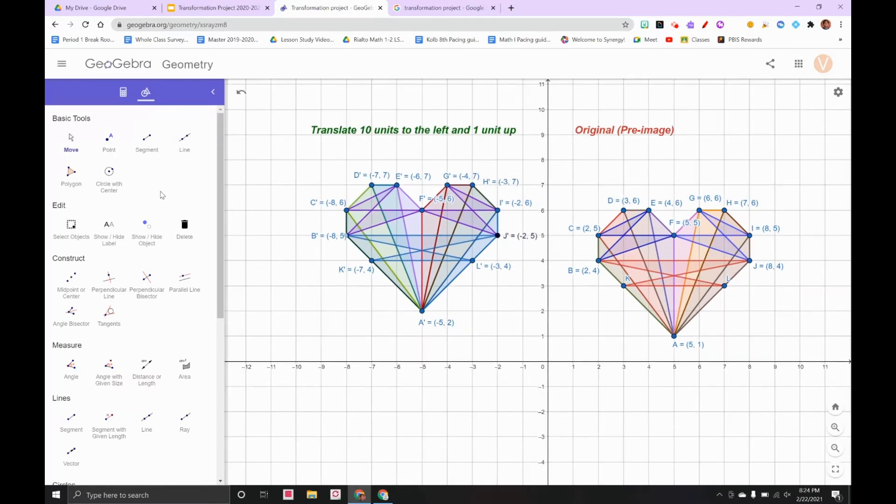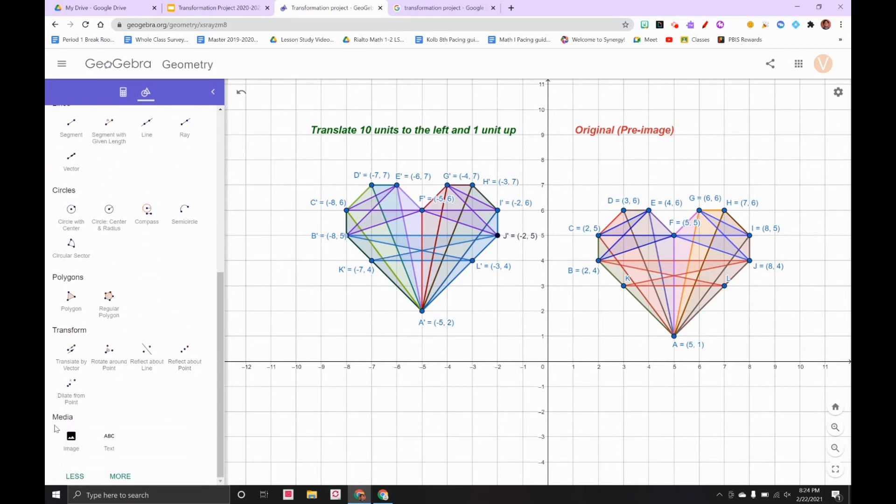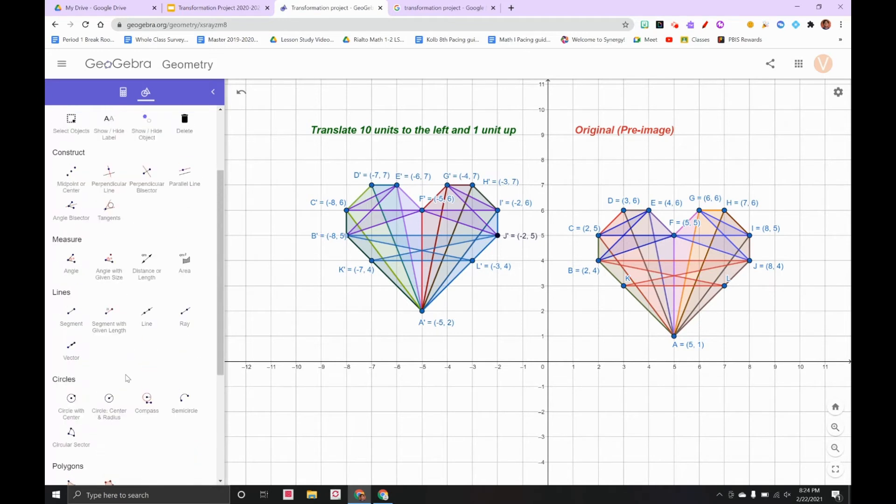All right, so what I tried to tell you earlier is draw the arrow pointing to the other one, which we can't. We can look at the vector. Let's see how does it look when you do vector. Yeah, I'm not really into this so much. Go back.